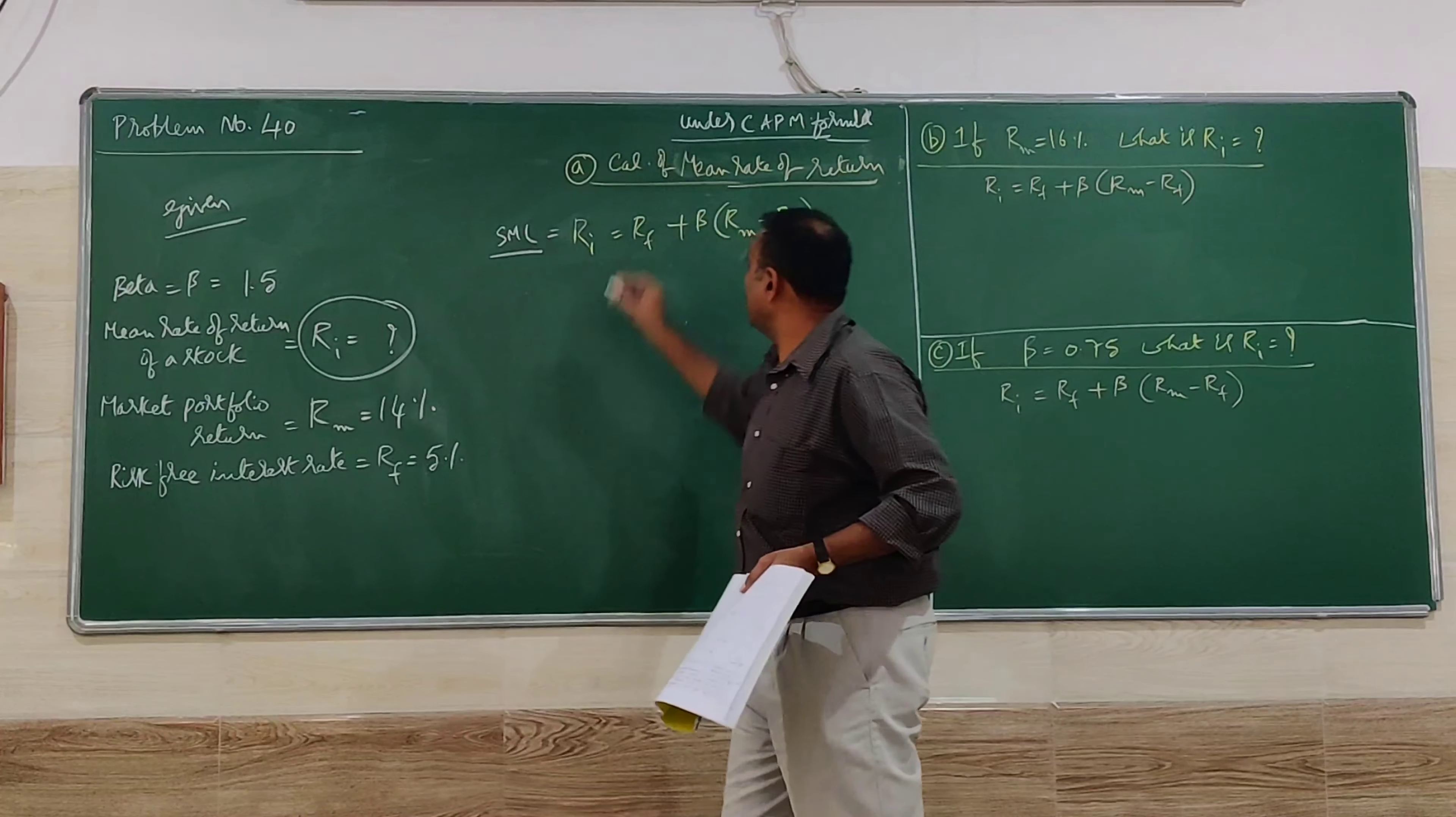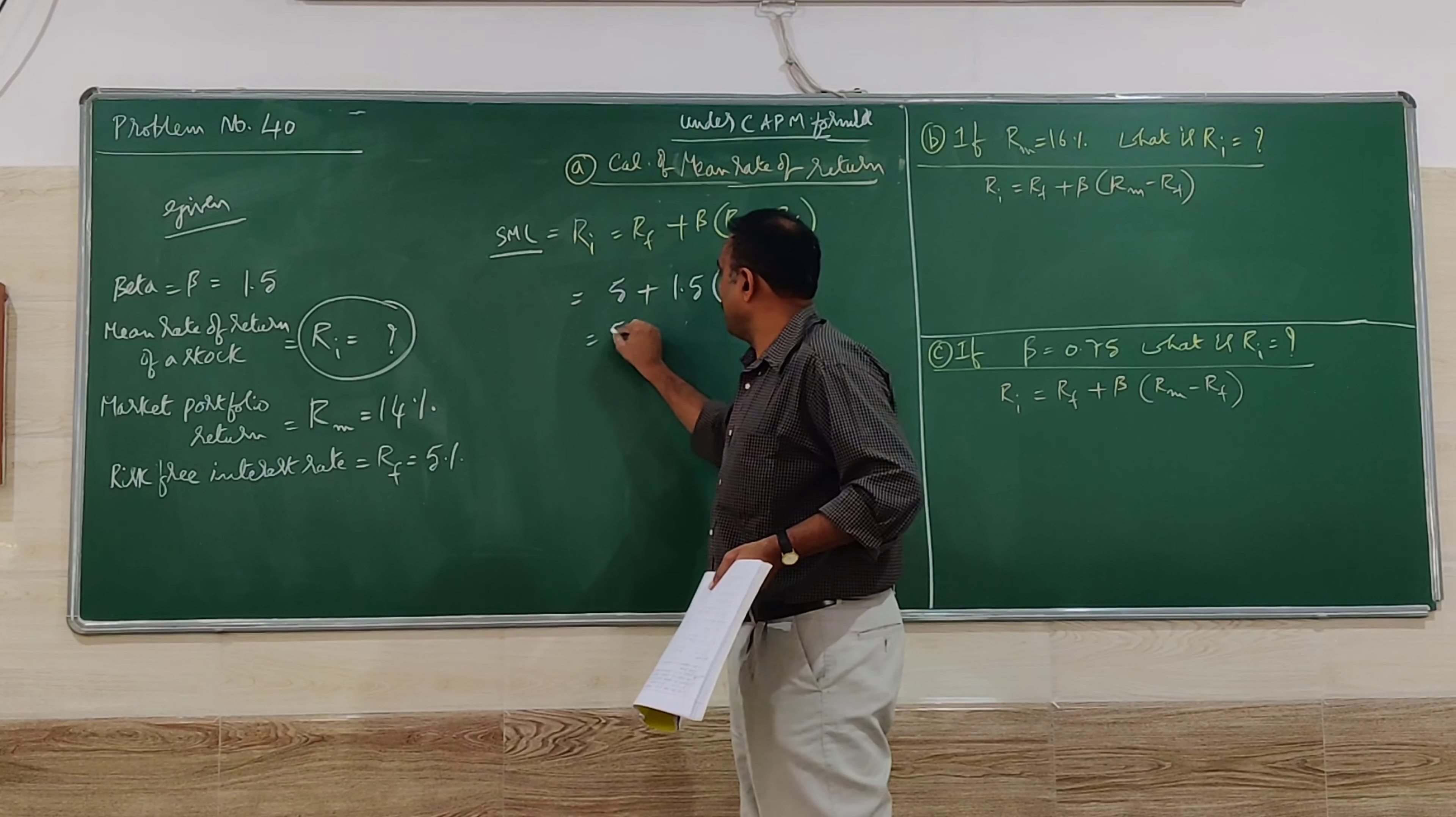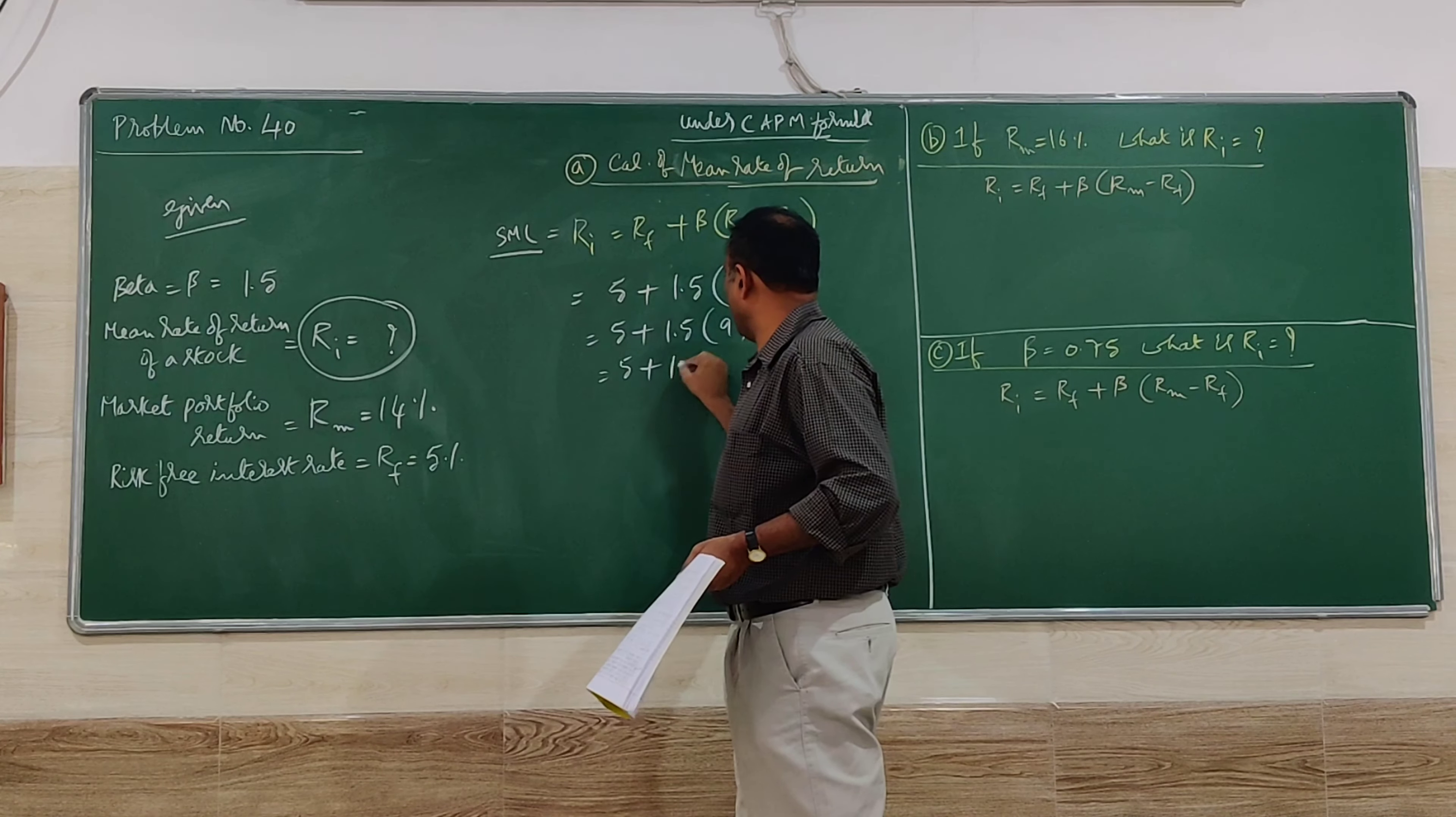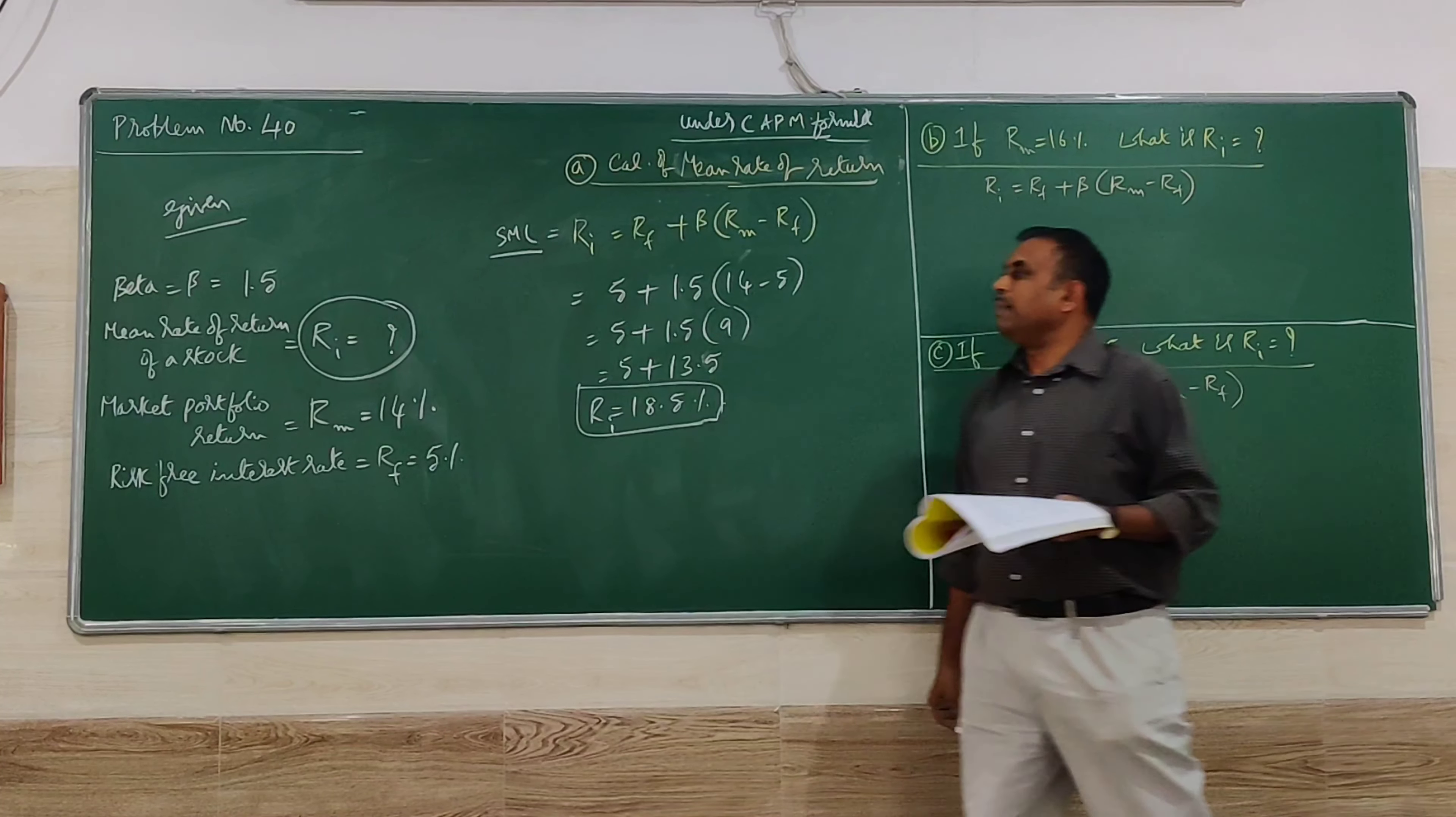RF is 5%, beta is 1.5, RM is 14% minus RF 5%, so RI = 5 + 1.5(14 - 5) = 5 + 1.5(9) = 5 + 13.5 = 18.5%. The mean rate of return for the particular stock is 18.5%.